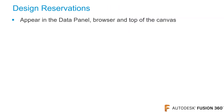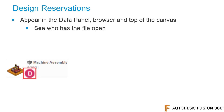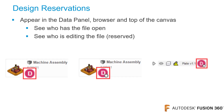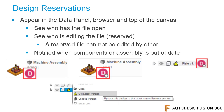Design reservations show you who is working or editing a file. This prevents design conflicts. Initials and a white dot will be displayed in the data panel, browser, and if multiple people have the file open, will be displayed at the top of the canvas. When a person has a file open, their initial will appear. When a file has a pending save, a white dot appears to the lower right corner of the initial. A reserved file cannot be edited by others. After saving the file, any assemblies that reference this file or others who have the file open will see a yellow triangle. This lets everyone know that there is a new version of this file.